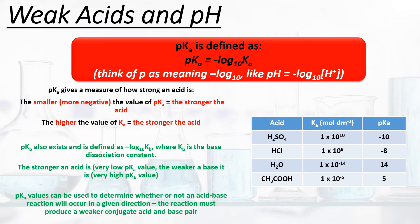pKb also exists. We defined Ka as the acid dissociation constant; we can also define Kb, the base dissociation constant — essentially the opposite of Ka. We define pKb as −log(Kb). The stronger an acid is, i.e. having a very low pKa value, the weaker a base it is, meaning it has a very high pKb value. pKa values can also be used to determine whether an acid-base reaction will occur in a given direction: the reaction must produce a weaker conjugate acid and base pair for it to proceed in the forward direction.